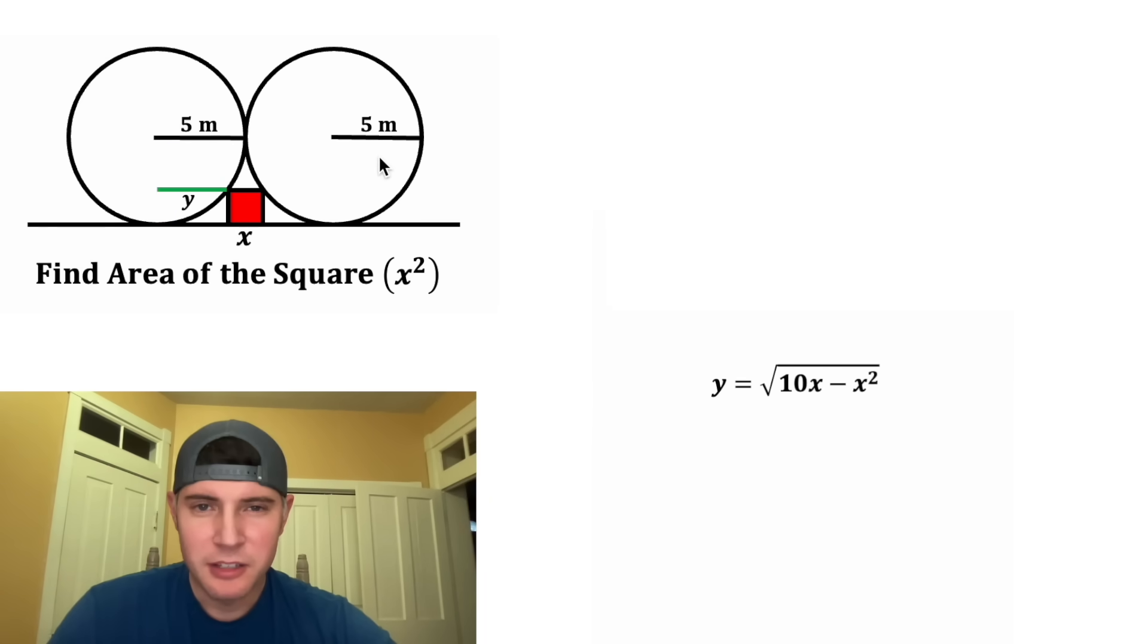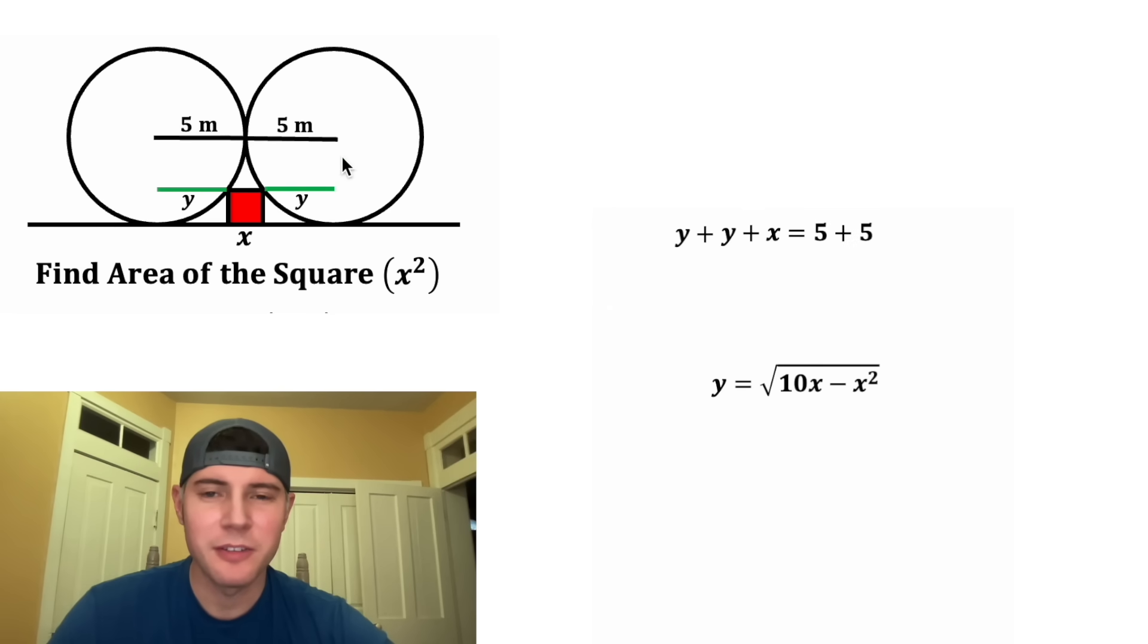And now we can clean things up a little bit. Let's scoot this over here, and let's duplicate the Y over here. Now this distance is going to be equal to this distance. So we know that Y plus X plus Y is equal to five plus five. And we can clean this up a little bit. Y plus Y is two Y, and five plus five is 10. And now we know that Y is equal to the square root of 10X minus X squared.